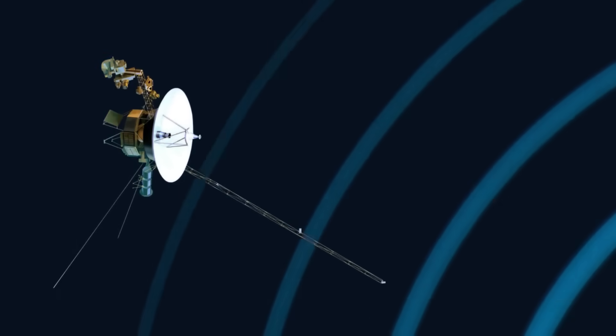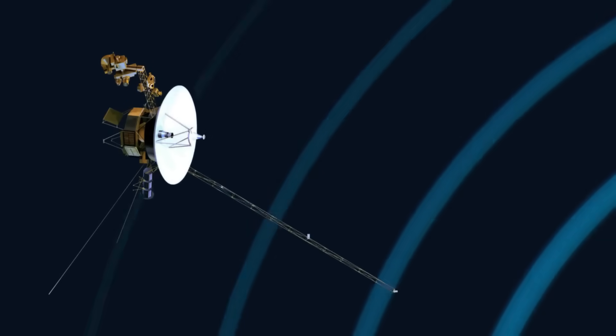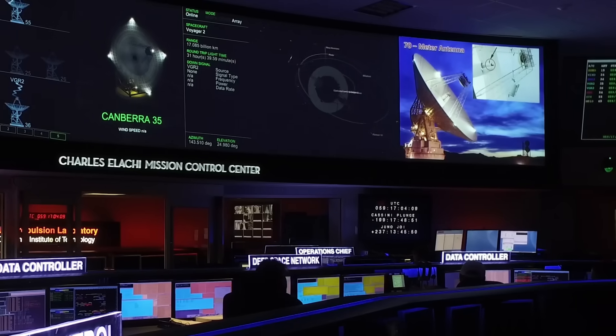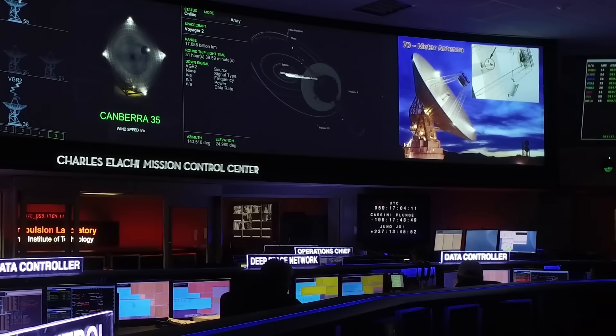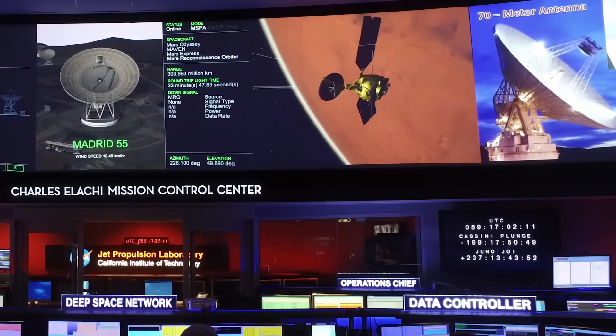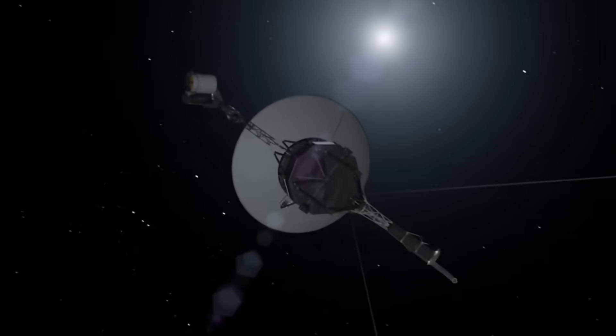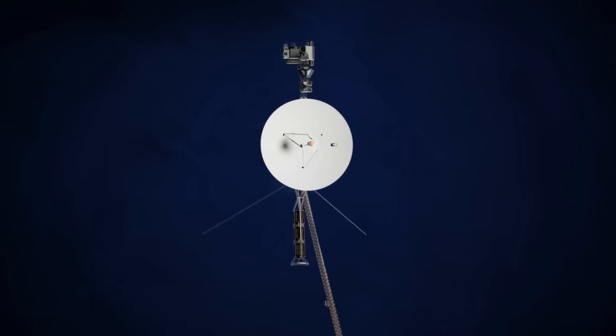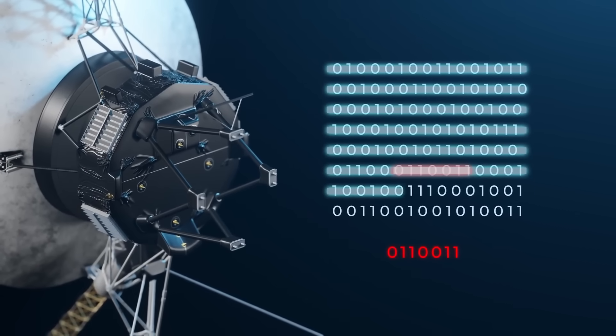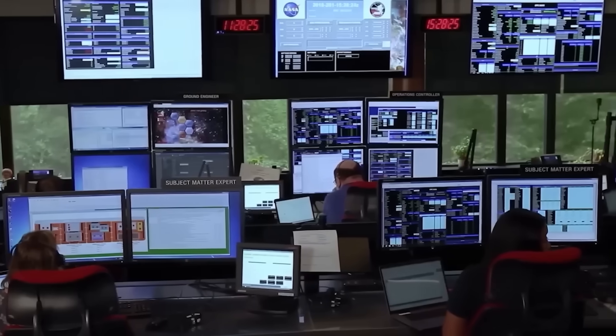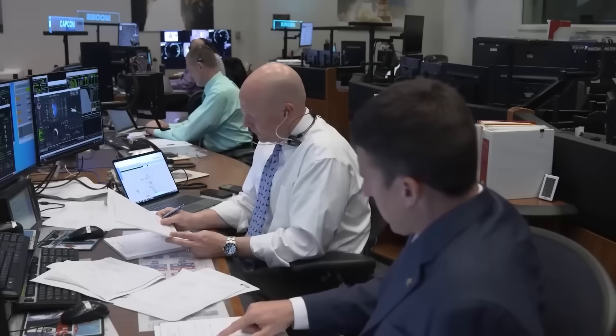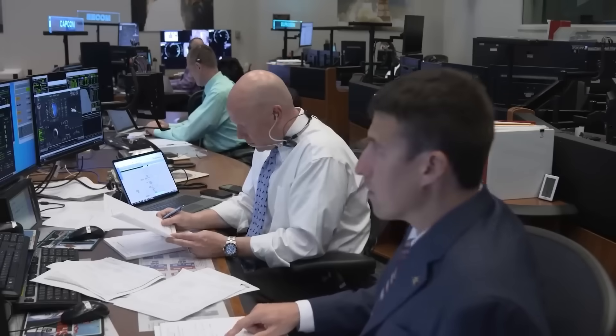Third, Voyager could be positioned at just the right point for gravitational lensing to occur. Imagine holding up a glass of water in front of a light bulb. The light bends, distorts, and creates patterns that weren't there before. Now replace the glass with a star and the light with cosmic radio waves. Suddenly, Voyager might be hearing echoes from places we never intended. This phenomenon could cause distant radio sources to be magnified and focused toward Voyager, creating signal patterns that appear artificial when they reach Earth.